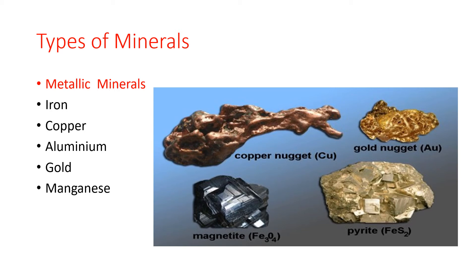Next, Manganese. The metal resembles iron in appearance. It is used to make steel and glass. Manganese is found in Karnataka, Odisha, Madhya Pradesh, Goa and Maharashtra.